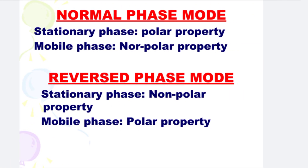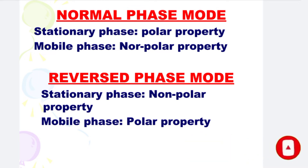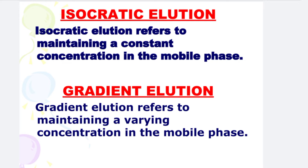Next is Normal Phase mode. In Normal Phase mode, the Stationary Phase has polar properties and the Mobile Phase has non-polar properties. Next is Reverse Phase chromatography. In Reverse Phase chromatography, the Stationary Phase has non-polar properties and the Mobile Phase has polar properties.